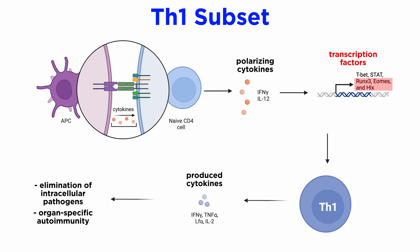IL-12-induced STAT4 is another important transcription factor involved in Th1 cell differentiation. Other notable transcription factors that participate in Th1 differentiation are RUNX3, EOMES or EOMESODERMIN, and HLX. Th1 cells are involved with the elimination of intracellular pathogens and are associated with organ-specific autoimmunity. They mainly secrete interferon gamma, lymphotoxin alpha or LT-alpha, and IL-2.